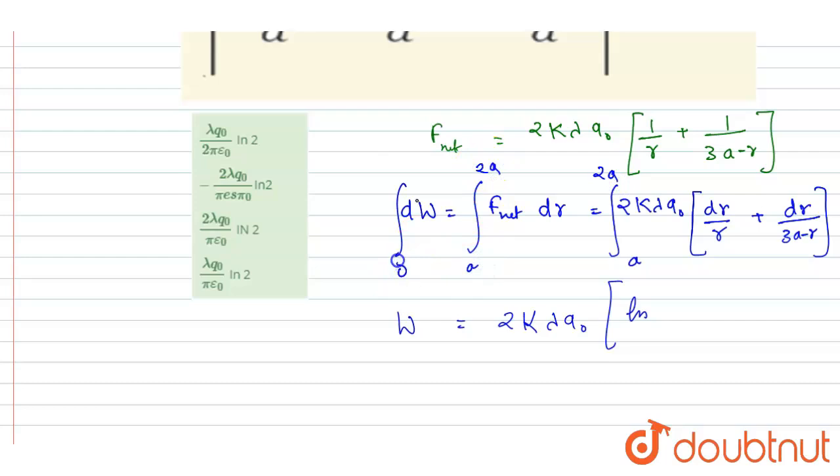And the work done we got, it is double. So I will write ln R. So here it will be, if you see, this is ln 3A minus R. And here it will be negative sign A to 2A. Now you can put the limit here.